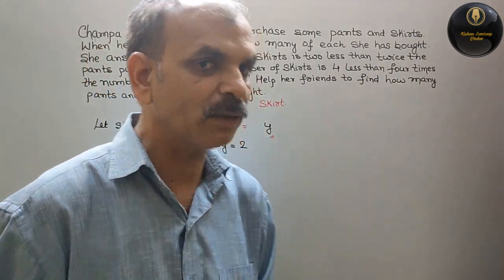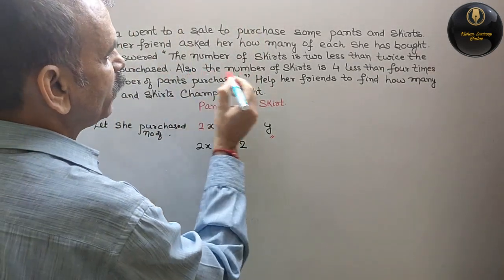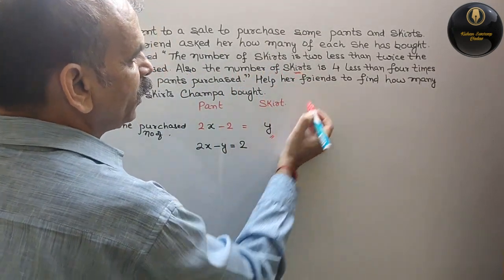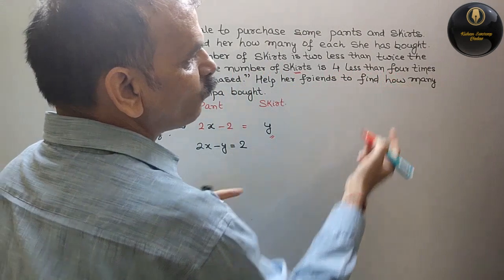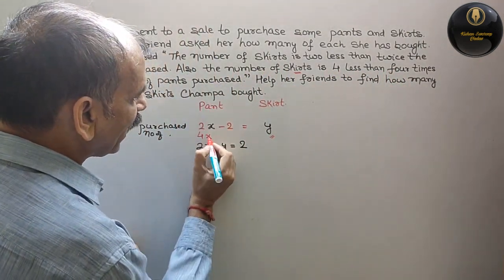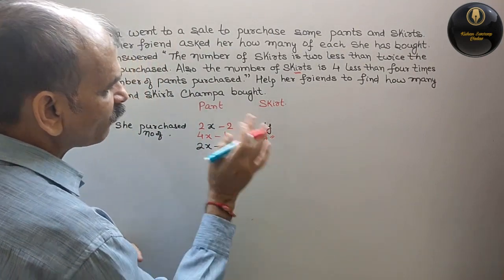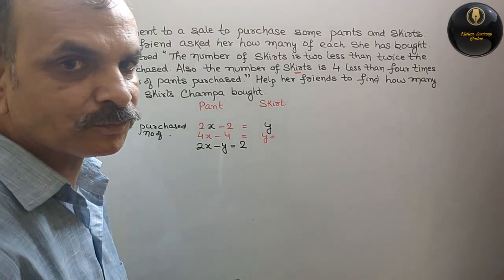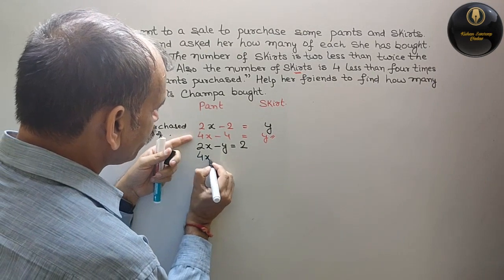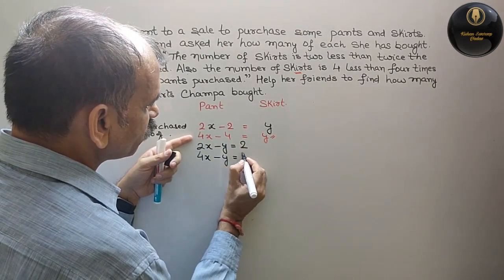Second condition: the number of skirts is 4 less than 4 times the number of pants. That means y = 4x - 4. Rearranging, the second equation is: 4x minus y is equal to 4.